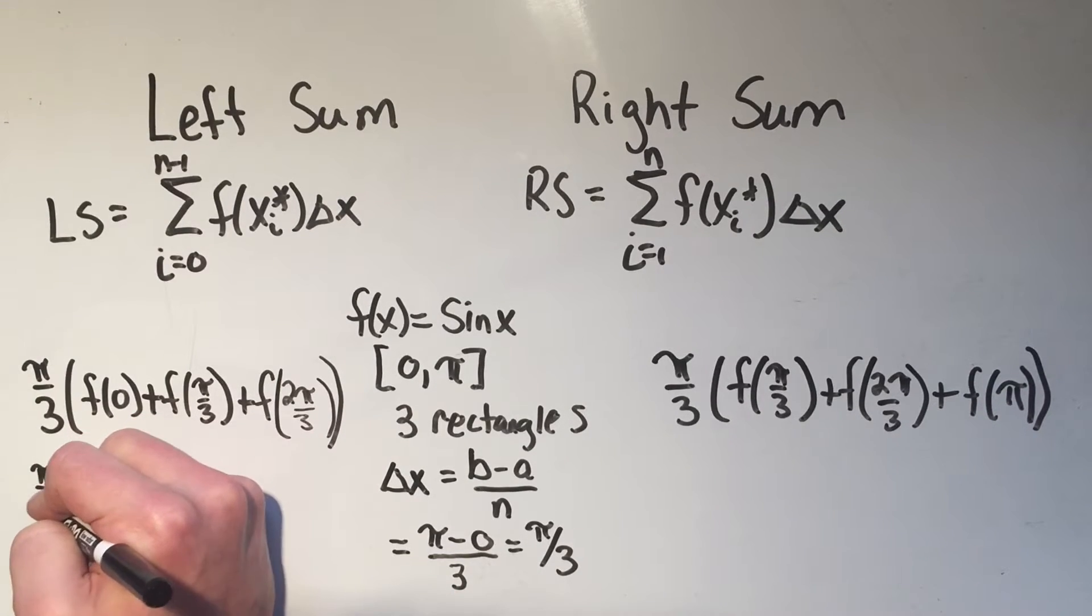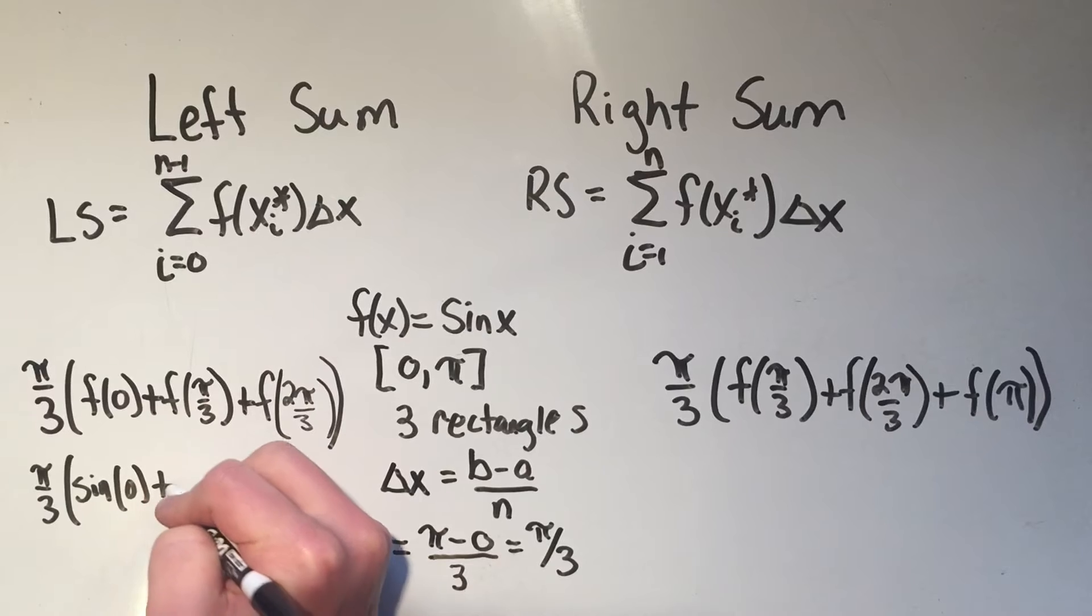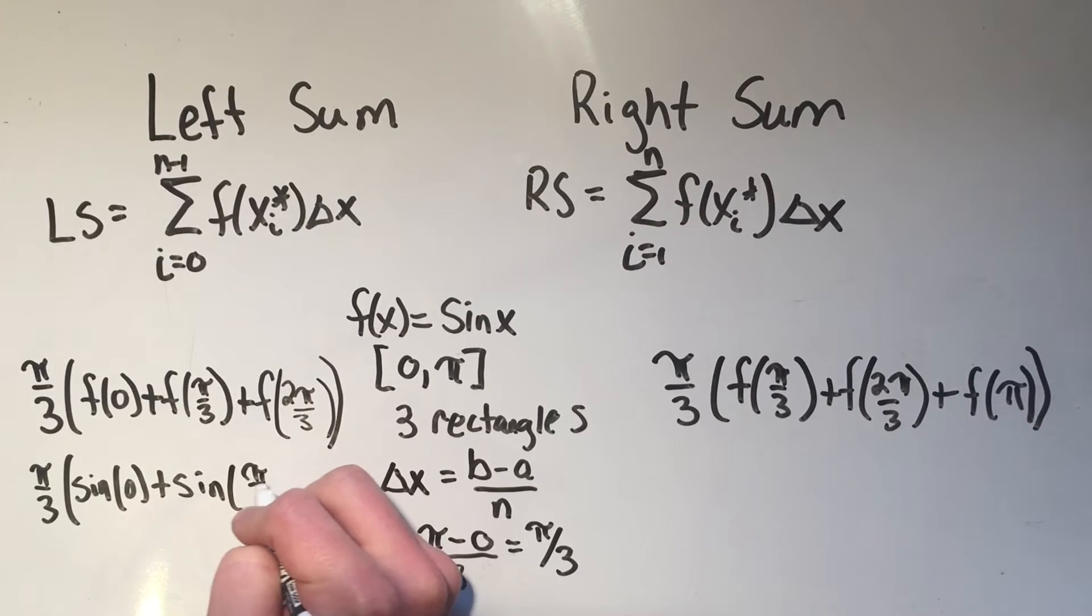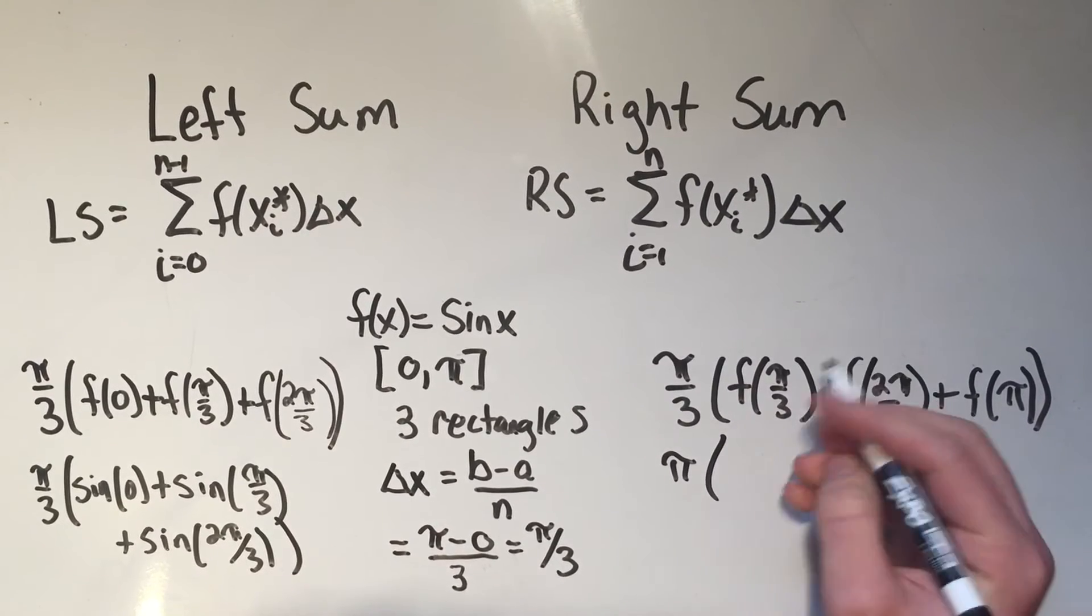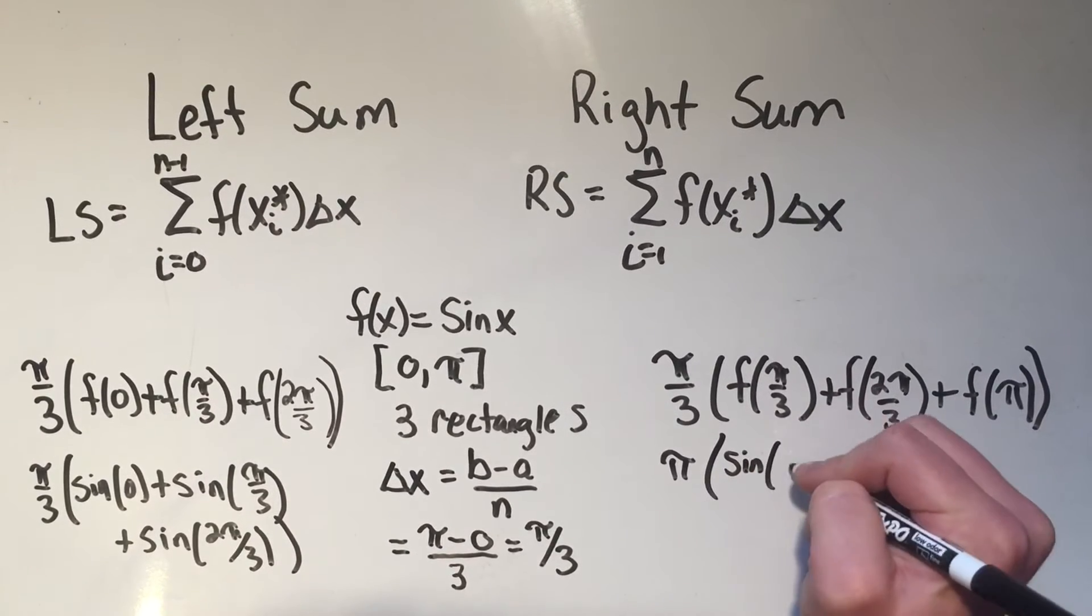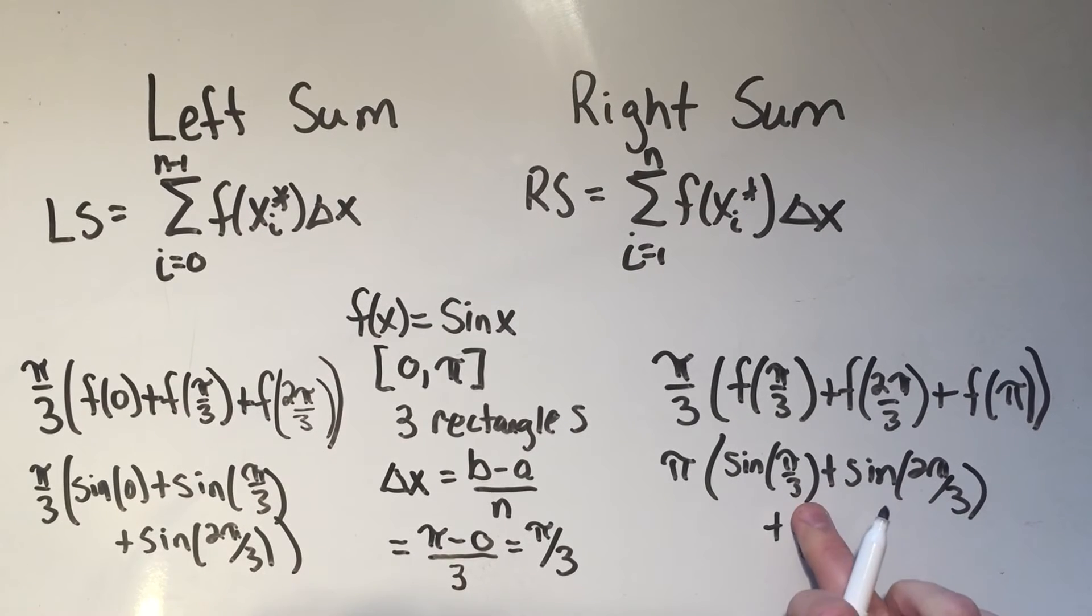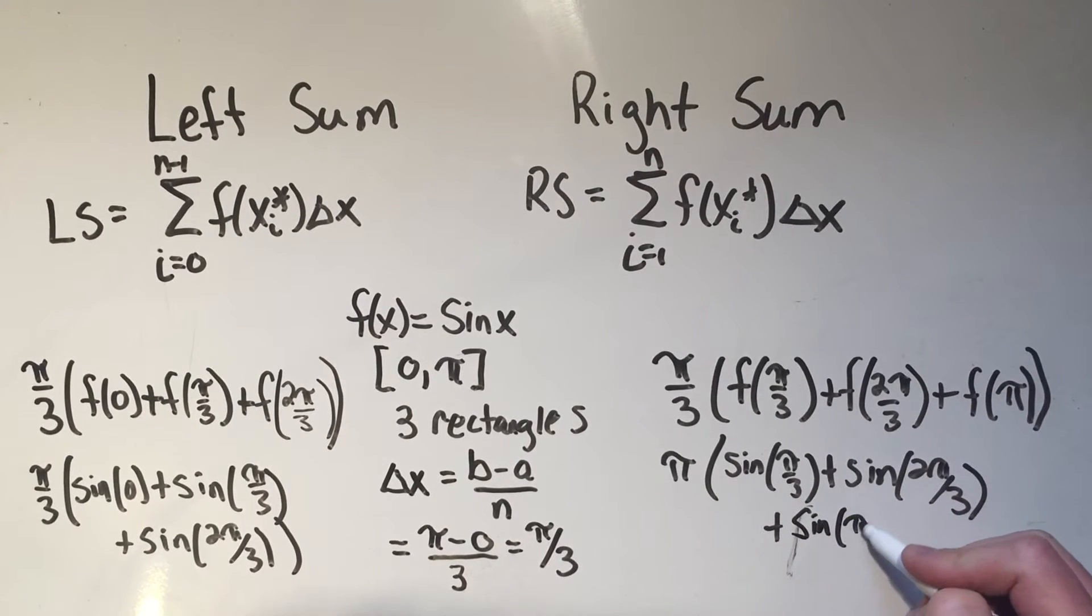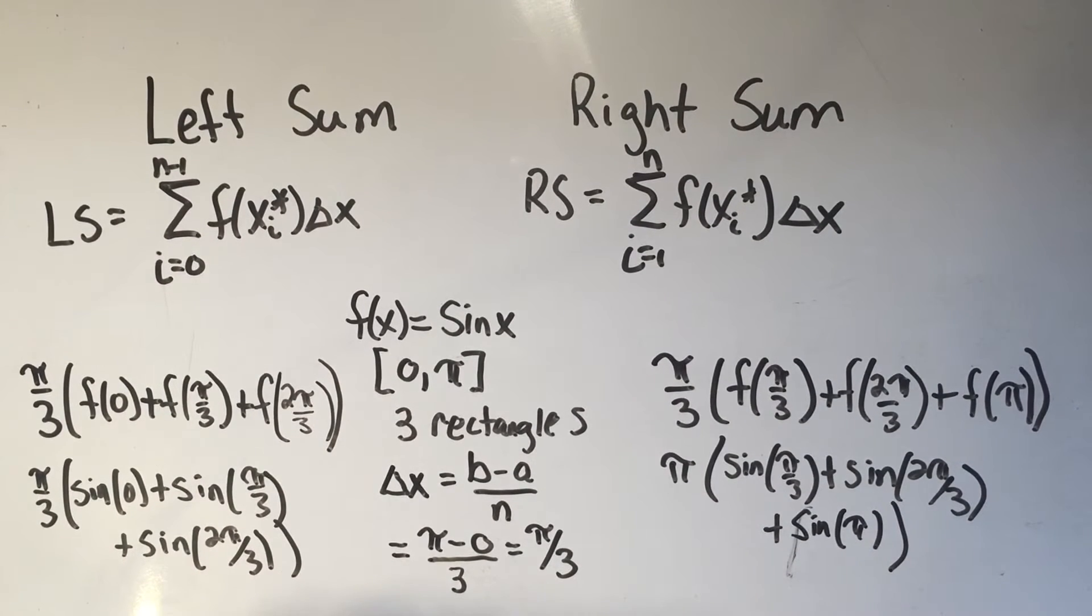So pi over three, all of these f's, they're just going to be sine. So this is just sine of zero, plus sine of pi over three, plus sine of two pi over three. Same thing over here, f of pi over three, that's sine of pi over three, plus sine of two pi over three, plus sine of pi. And now, maybe we're going to use a calculator. Or if you know these values, good for you, you probably should know them by now.